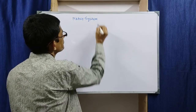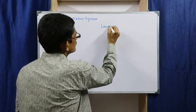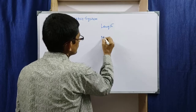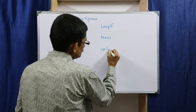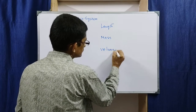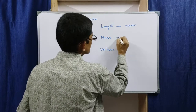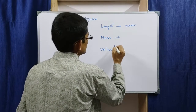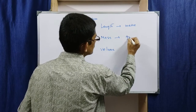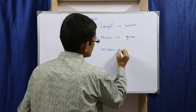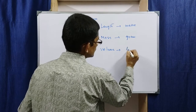In the metric system, three physical quantities have been taken: length, mass, and volume. The unit name of length was meter, the unit name of mass was gram, and the unit name of volume was liter.